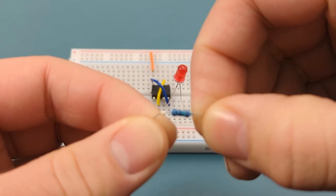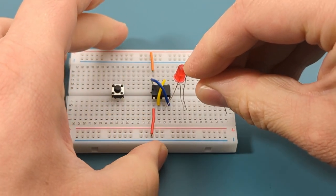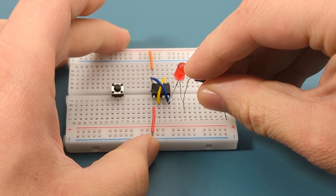Bend the ends of a 150 ohms resistor. Add a 150 ohms resistor between the negative leg of the LED and the negative rail.